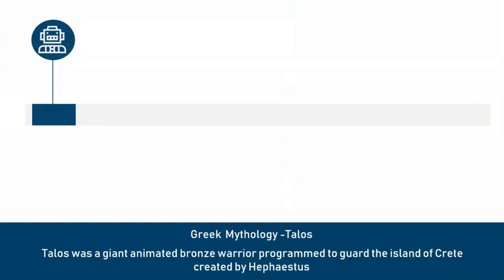The concept of artificial intelligence goes back to the classical ages. Under Greek mythology, the concept of machines and mechanical men were well thought of. An example of this is Talos — a giant animated bronze warrior who was programmed to guard the island of Crete. These are just ideas; nobody knows if this was actually implemented, but machine learning and AI were thought of long ago.